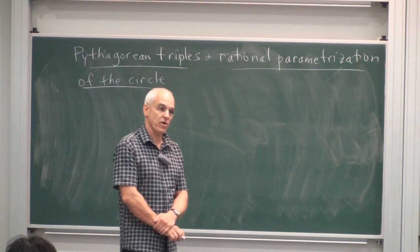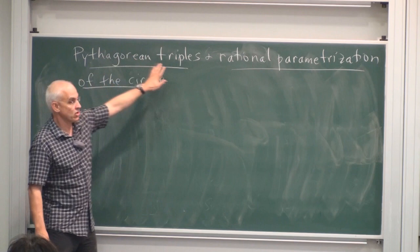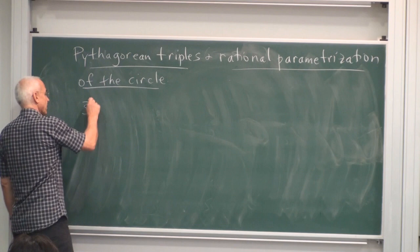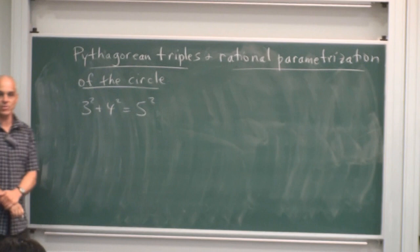Okay, so another interesting development that's connected with Pythagoras' theorem is this notion of Pythagorean triples. And closely related to that, the rational parametrization of the circle. So what is a Pythagorean triple? Well, it's just three numbers, three natural numbers which satisfy Pythagoras' theorem.